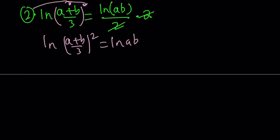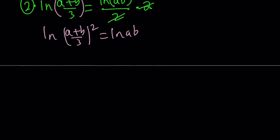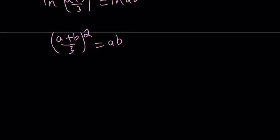So now we got ln's on both sides. This implies, since ln is a one-to-one function, this implies that ((a+b)/3)² equals ab.